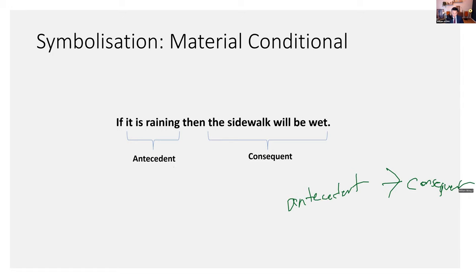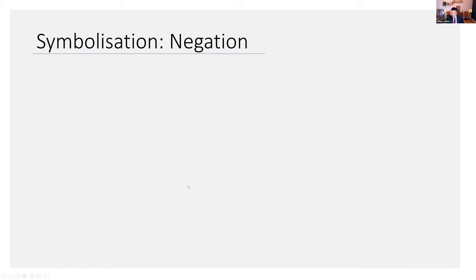We should put the antecedent before the arrow. If the antecedent is W and the consequent is P, then we should do it this way and not say P entails W. Make sure you get it the right way around. You can make sure you get it the right way around just by thinking about it. That's the material conditional.